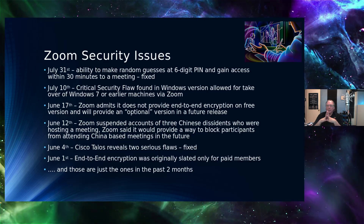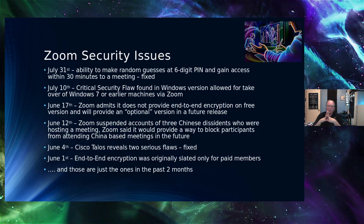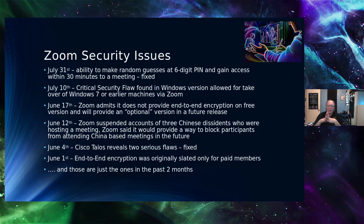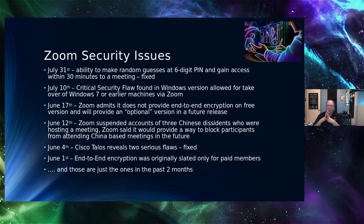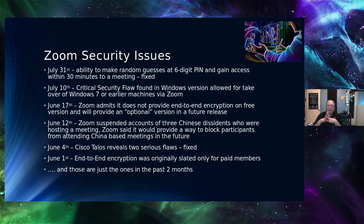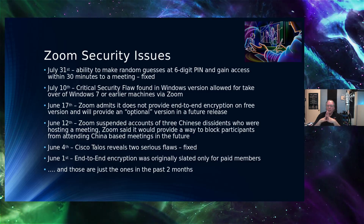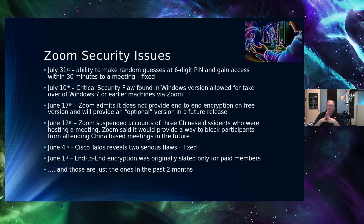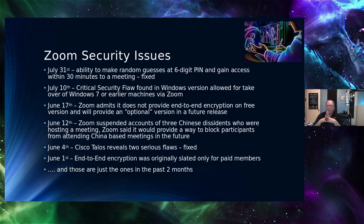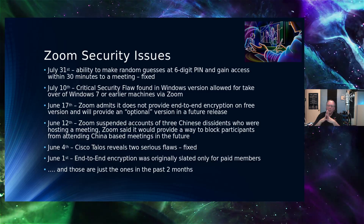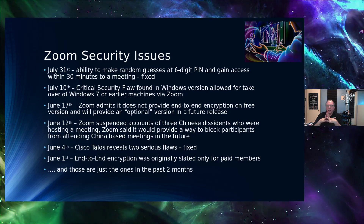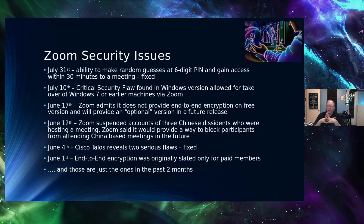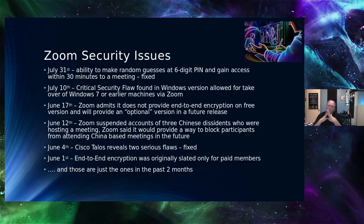On June 17th, Zoom admitted it was not providing end-to-end encryption on the free version, though they said they would provide it in a future release. On June 12th, Zoom suspended the accounts of three Chinese dissidents — not only suspending the accounts but blocking an ongoing video stream — which raised concerns from the U.S. Congress. Zoom said it would provide a way to block participants from attending a Chinese-based meeting in the future, which did not go over well with Congress.